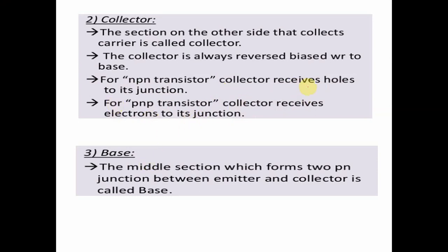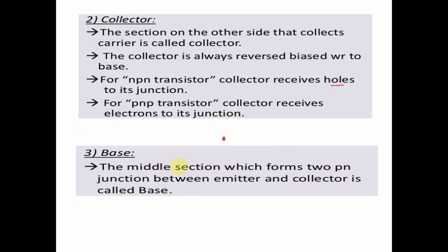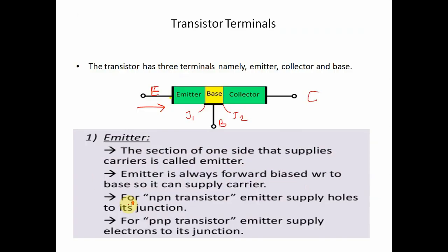In a PNP transistor, the collector collects holes. The middle section which forms two PN junctions between the emitter and collector is called the base. The base junction lies in between the emitter and collector. Because of the base junction, the transistor has two junctions: J1 junction and J2 junction.